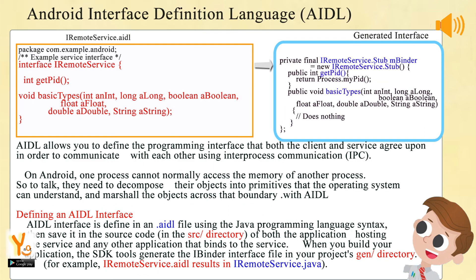Android Interface Definition Language (AIDL) allows you to define the programming interface that both the client and service agree upon in order to communicate with each other using inter-process communication (IPC). On Android, one process cannot normally access the memory of another process. So to communicate, they need to decompose their objects into primitives that the operating system can understand, and marshal the objects across that boundary with AIDL.